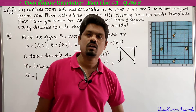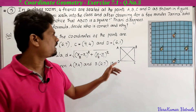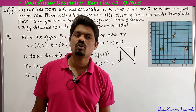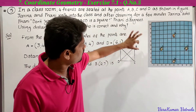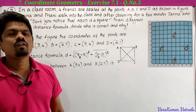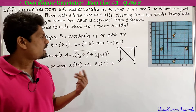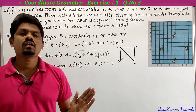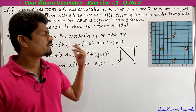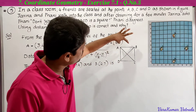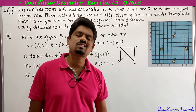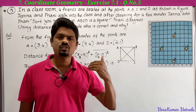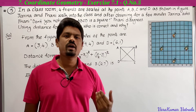Now we have to check whether A, B, C, D form a square or not. We do this by finding the distances AB, BC, CD, and DA. If all four side lengths are equal, it could be a square or a rhombus. So we also need to find the diagonals BD and AC. If BD equals AC, we can confirm that ABCD is a square. The distance formula is: d = √[(x₂ - x₁)² + (y₂ - y₁)²].